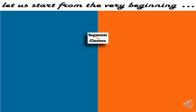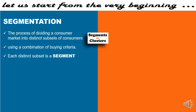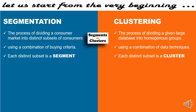Let us start from the very beginning with the definitions of segmentation and clustering. Segmentation is the process of dividing a consumer market into distinct subsets of consumers in terms of their buying taste and buying behavior, using a combination of buying criteria like demographic, geographic, behavioral, etc. Each distinct subset is a segment.